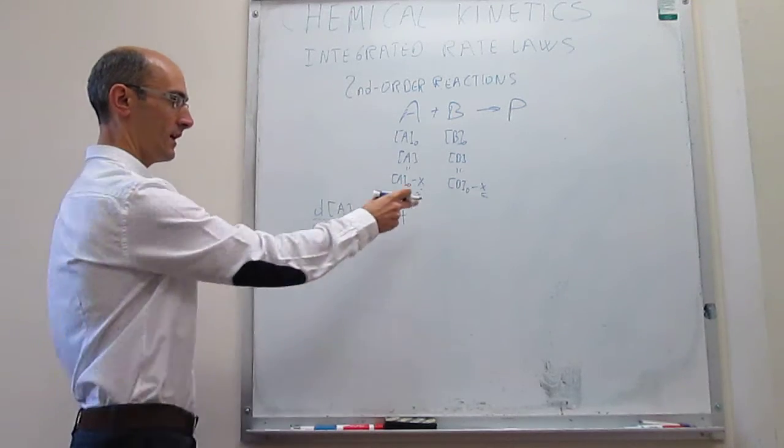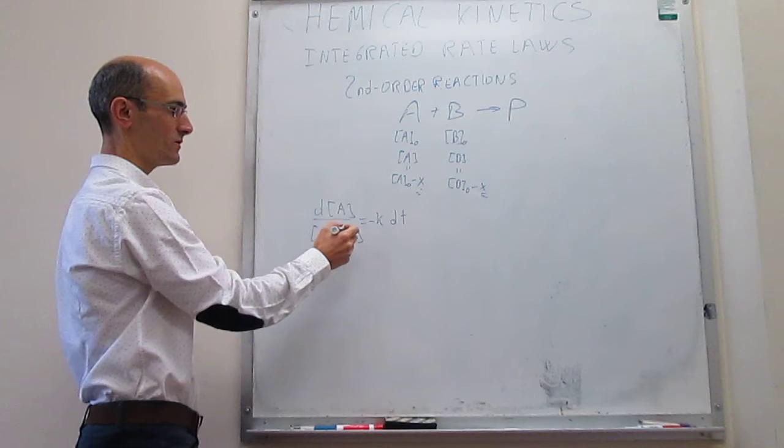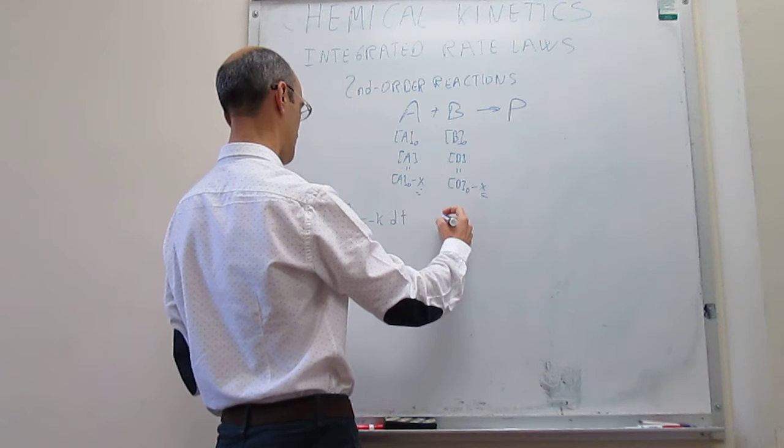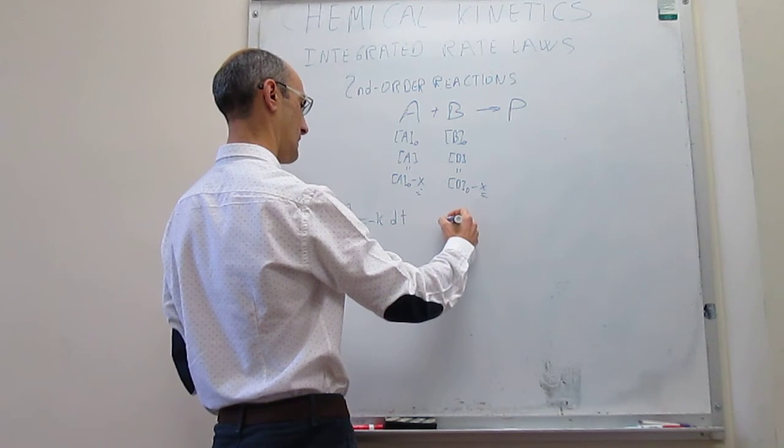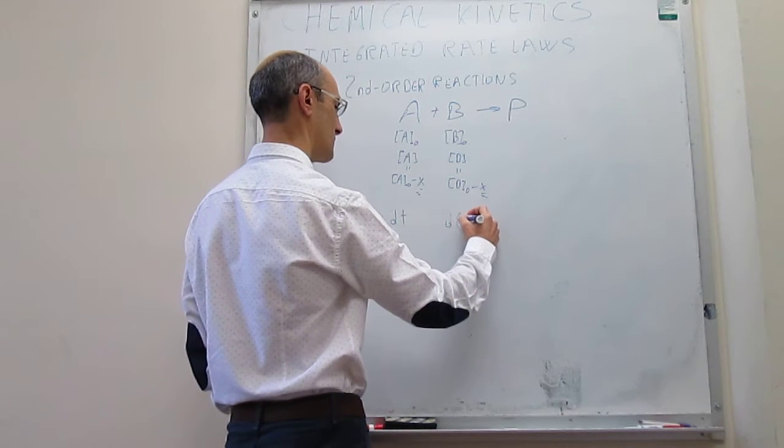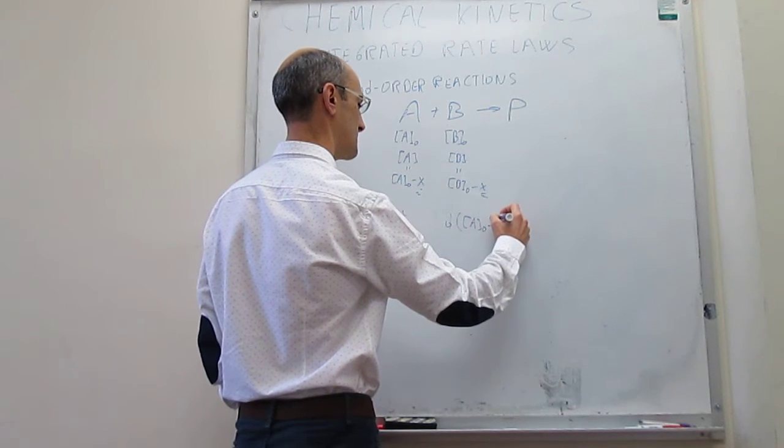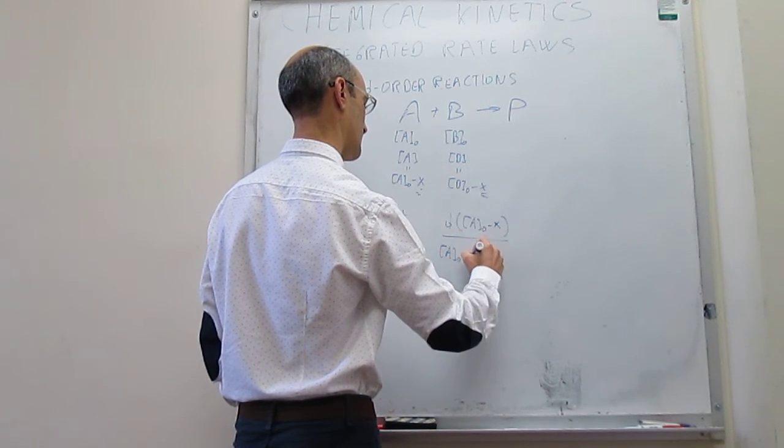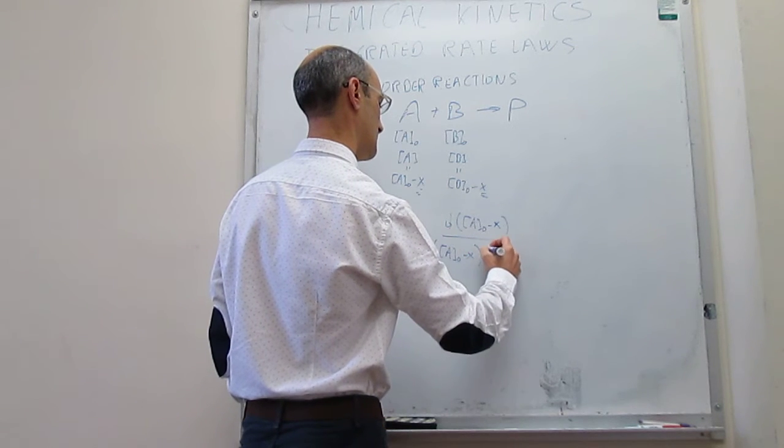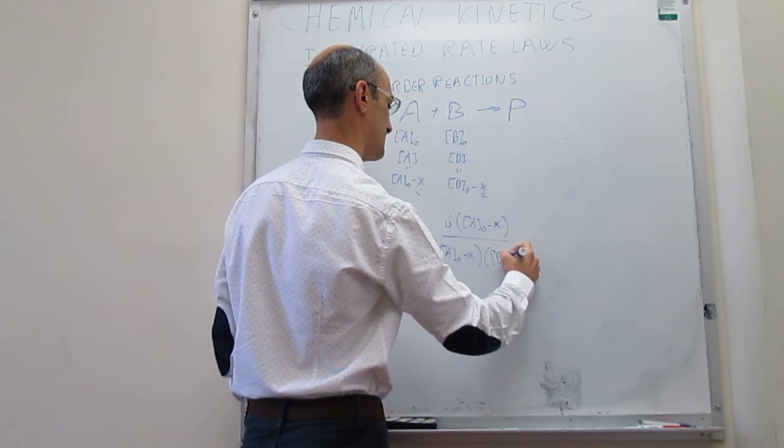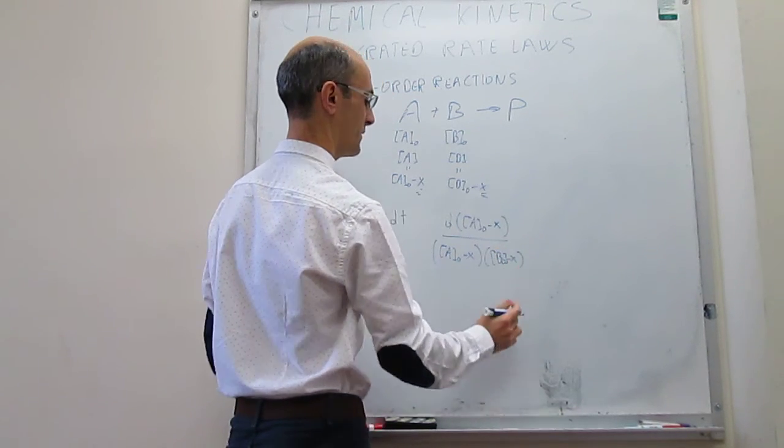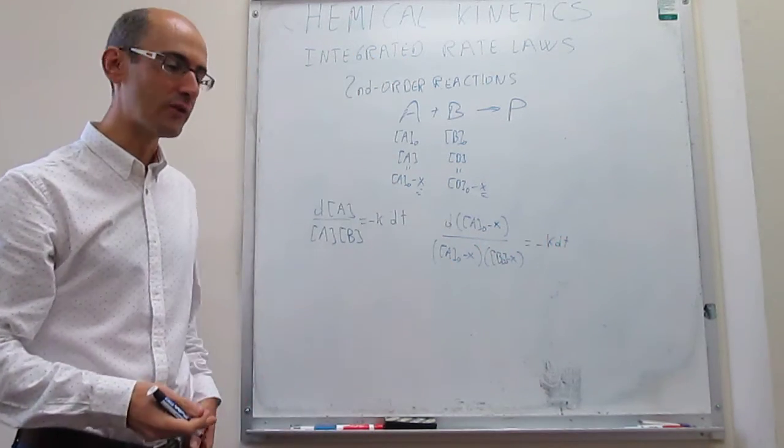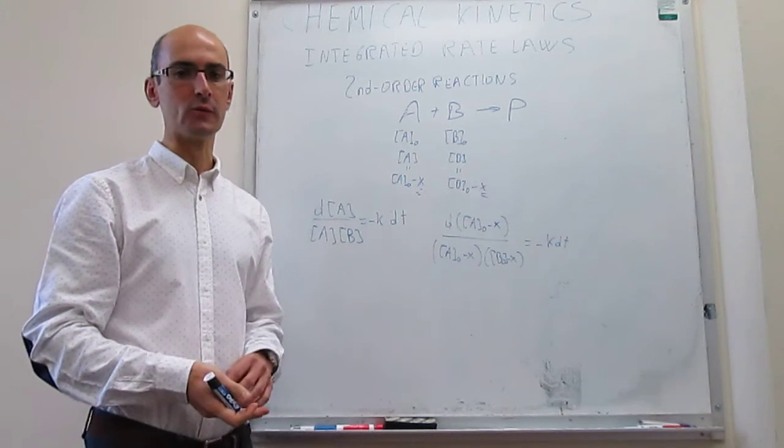So then we can actually take this and replace these concentrations by A-naught minus X or B-naught minus X. So we can say that this differential expression is going to be equal to the differential of A-naught minus X over A-naught minus X times B-naught minus X, and this is equal to minus K differential of T. It turns out that now you only have one variable to integrate, which is this X, and this is not so difficult to integrate.